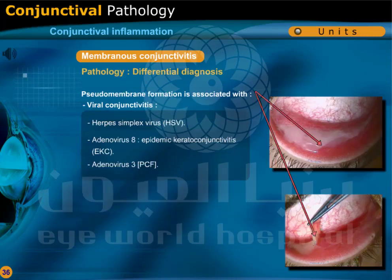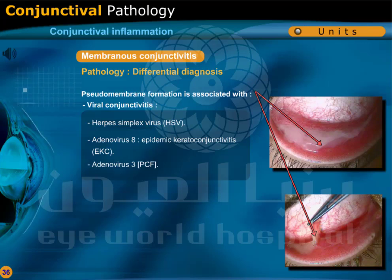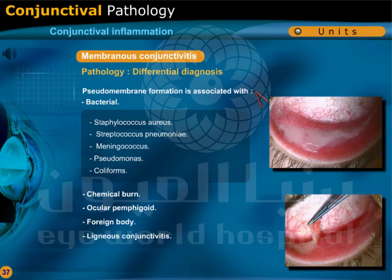Differential diagnosis: pseudomembrane formation is associated with viral conjunctivitis caused by Herpes simplex virus, Adenovirus 8 causing epidemic keratoconjunctivitis, Adenovirus 3 causing pharyngoconjunctival fever. Bacterial agents include Staphylococcus aureus,